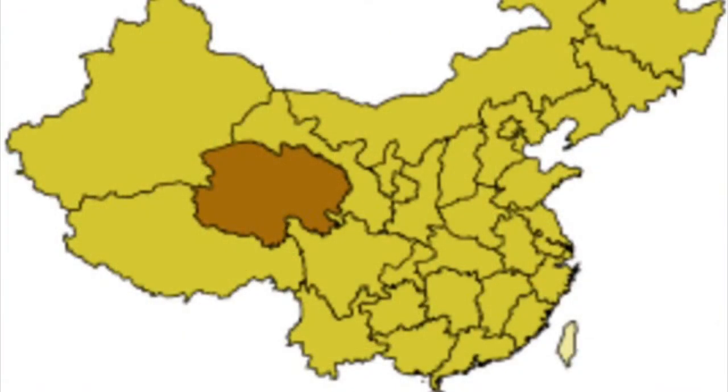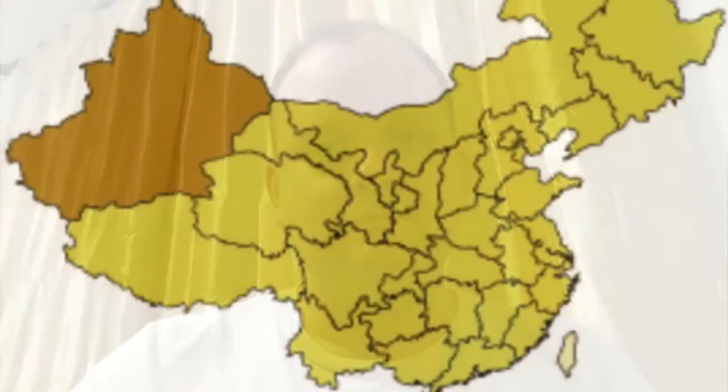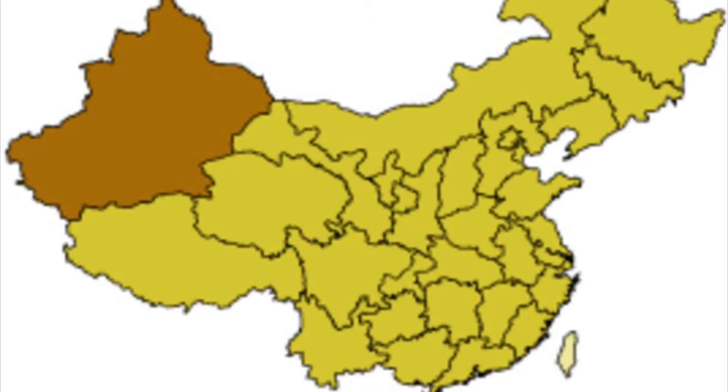The least populous province, by contrast, is actually the largest by area: Qinghai. But it's still about 10 times as populous as the least populous U.S. state, Wyoming. The five autonomous regions, which are called that because they are designated for ethnic minorities, take up considerable land. For example, the largest autonomous region, Xinjiang, is the eighth largest country subdivision in the world, though slightly smaller than the state of Alaska. The autonomous regions are much less densely populated than the provinces, which is why they hold a much lesser share of the country's population. Still, even the least populous autonomous region, Tibet, has three and a half million people — more than 20 U.S. states.